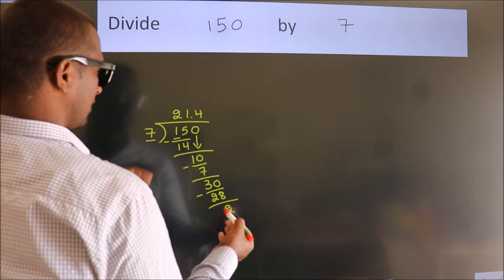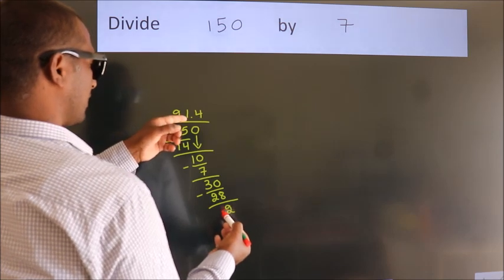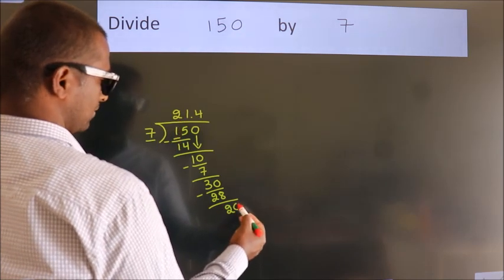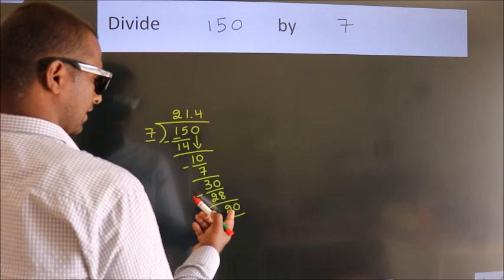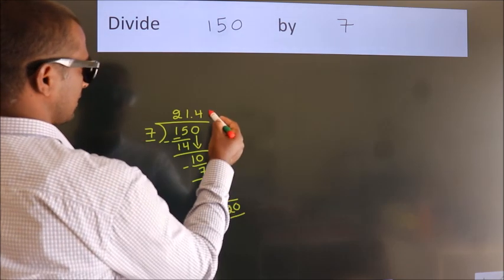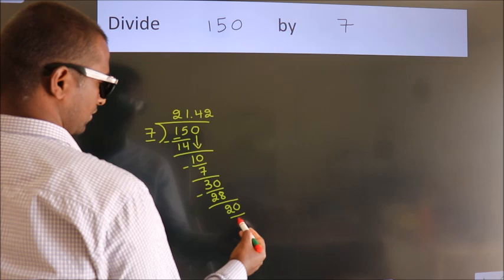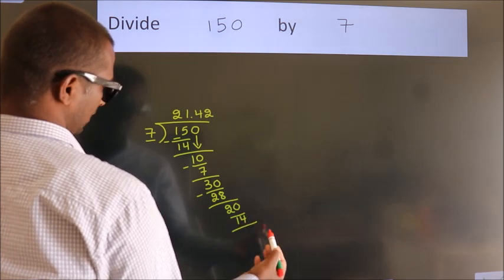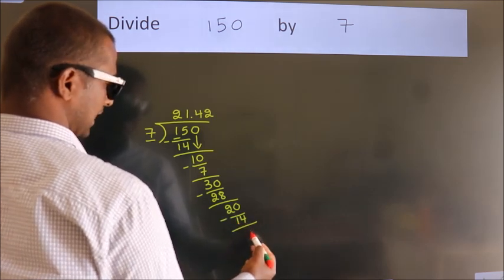After this, we already have the decimal, so directly take 0, giving us 20. A number close to 20 in the 7 table is 7 twos, 14. Now we subtract and get 6.